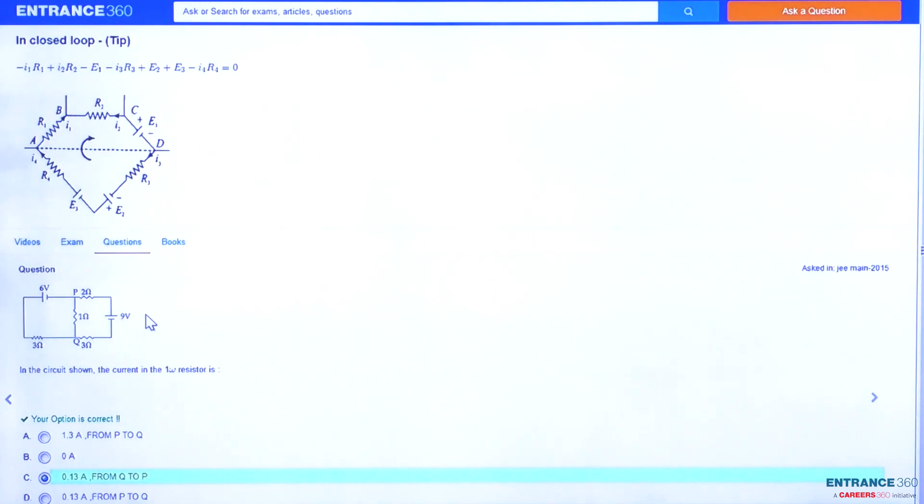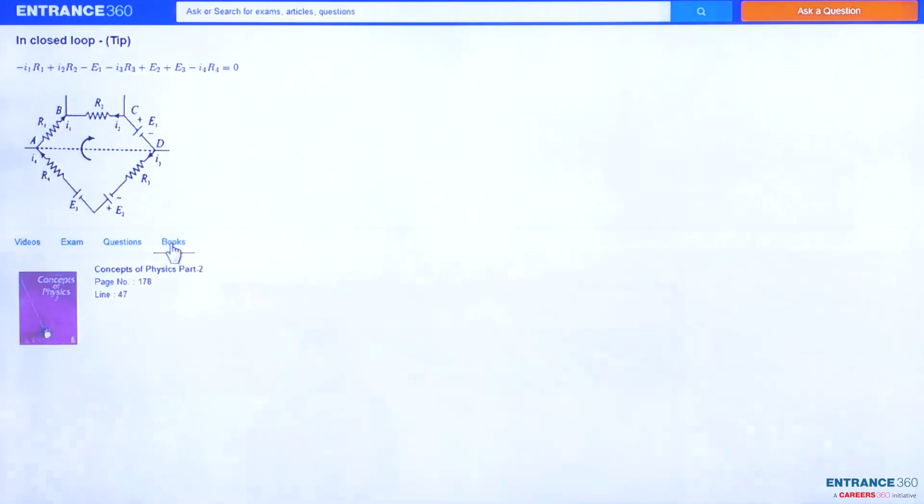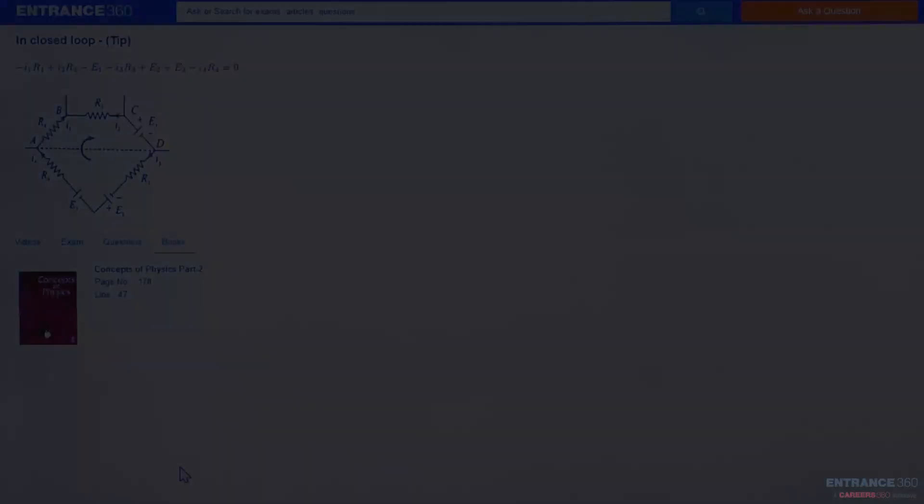To know more about the concept of Kirchhoff's voltage law and how to apply this in closed loop, you can watch the video here which is of small duration. You can get the concept from the book Concepts of Physics Part 2 by H.C. Verma, page number 178, line number 47. Thank you.